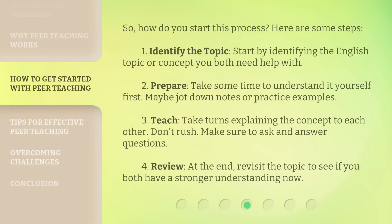So how do you start this process? Here are some steps. First, identify the topic — start by identifying the English topic or concept you both need help with. Second, prepare — take some time to understand it yourself first, maybe jot down notes or practice examples. Third, teach — take turns explaining the concept to each other. Don't rush; make sure to ask and answer questions. Fourth, review — at the end, revisit the topic to see if you both have a stronger understanding now.